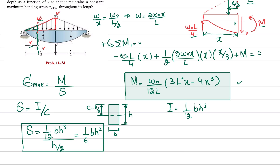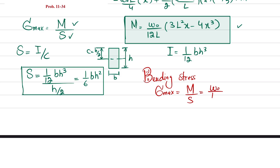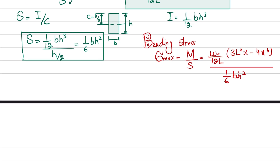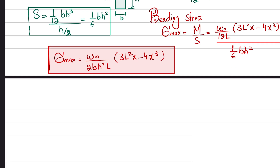Now substituting into the bending stress formula: σ_max = M/S = [(w-naught/12L)·(3L²x - 4x³)] / [(1/6)·b·h²]. Simplifying, the maximum bending stress is: σ_max = (w-naught / 2b·h²·L) · (3L²x - 4x³). This is equation 1, giving maximum bending stress as a function of x.